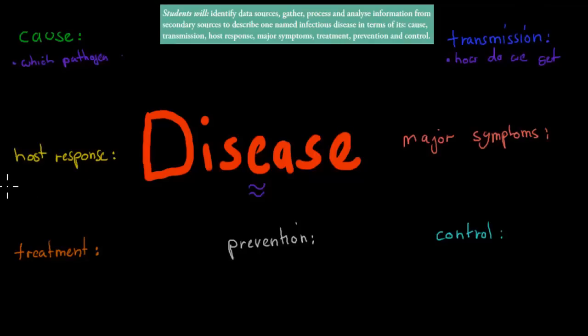Then the host response, that means what does our body do? So what does our body do to defend itself? In most cases, there will be white blood cells which would try to kill it. There would be some other chemicals that our body releases, antibodies and all that kind of stuff. So host response means what does our body do to try to defend against that disease or that pathogen.